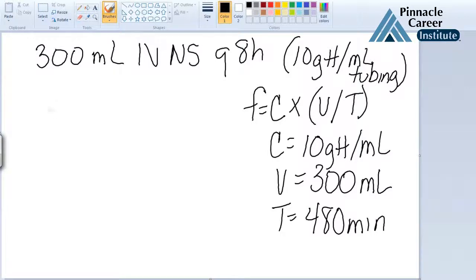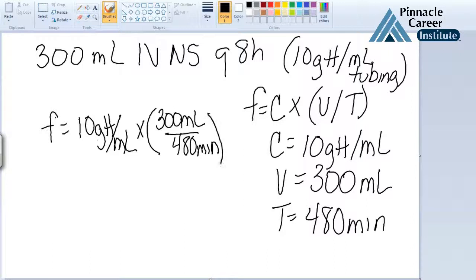Let's plug in our formula. We'll have F equals 10 gtt per mL times 300 milliliters over 480 minutes. Now you have milliliters on the bottom on this side and milliliters on the top on this side, so they're going to cancel each other out. So let me rewrite that: you're going to have 10 gtt times 300 over 480 minutes.